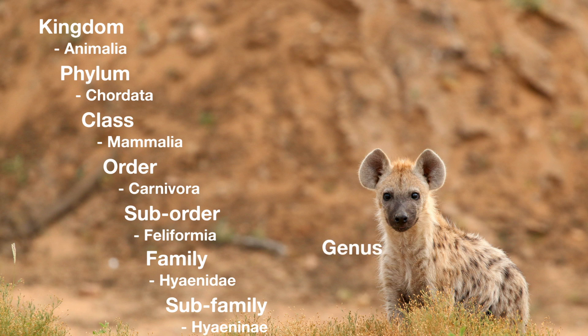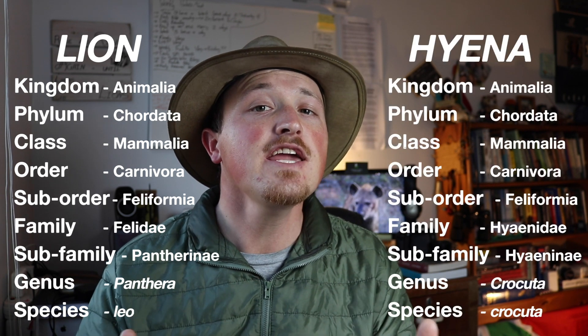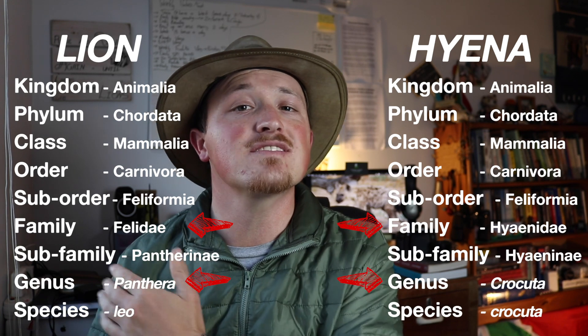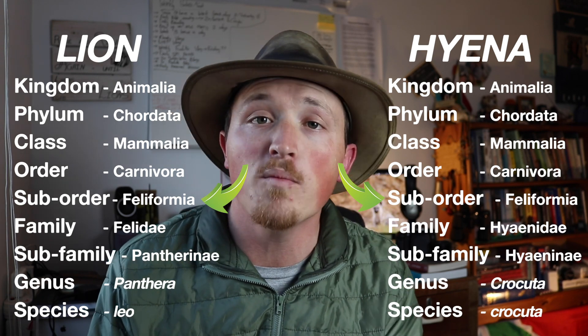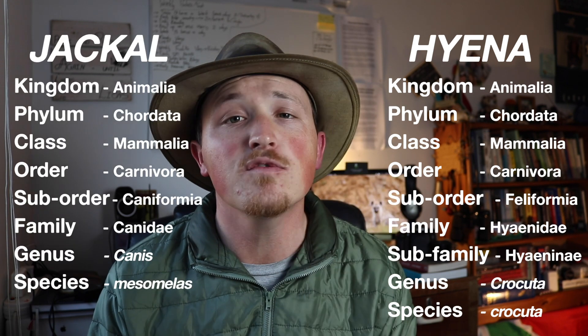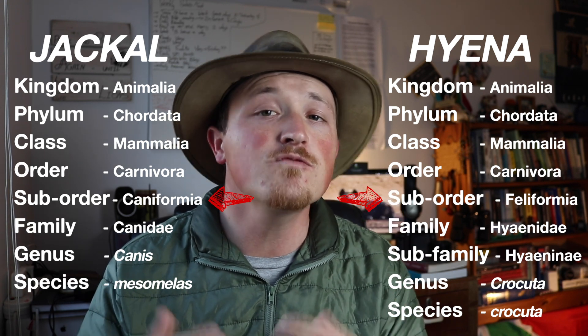Finally, you get the genus Crocuta and the species Crocuta. If you compare a lion's taxonomy to that of a spotted hyena, the difference only comes in with the last three steps — family, genus, and species — but the sub-order is still the same: Feliformia. And if you compare a spotted hyena to a true dog like a black-backed jackal, the difference comes in at the sub-order level, since true dogs are Caniformia. So even though hyenas are more dog-like in appearance, scientists have found they are actually more closely related to cats — more from a genetical point of view rather than physical attributes.